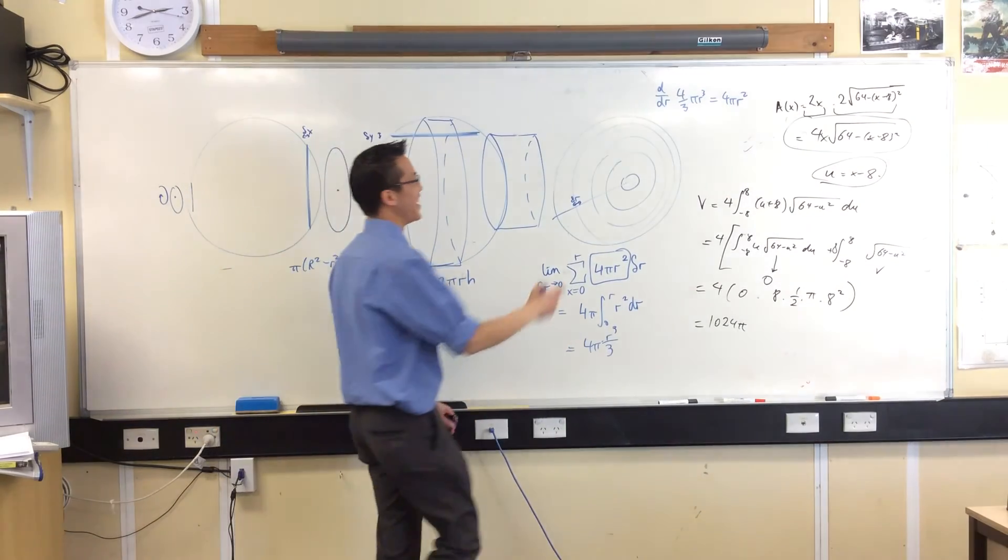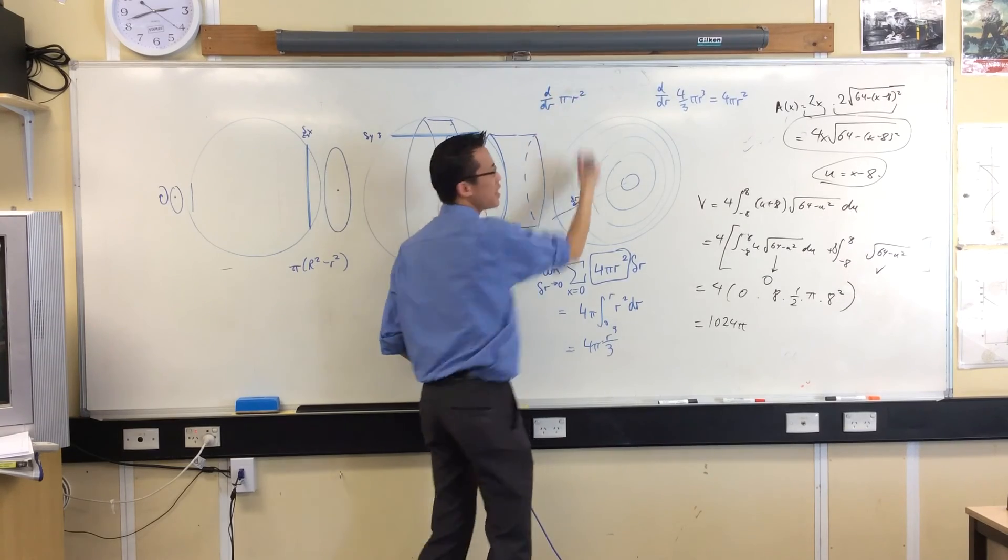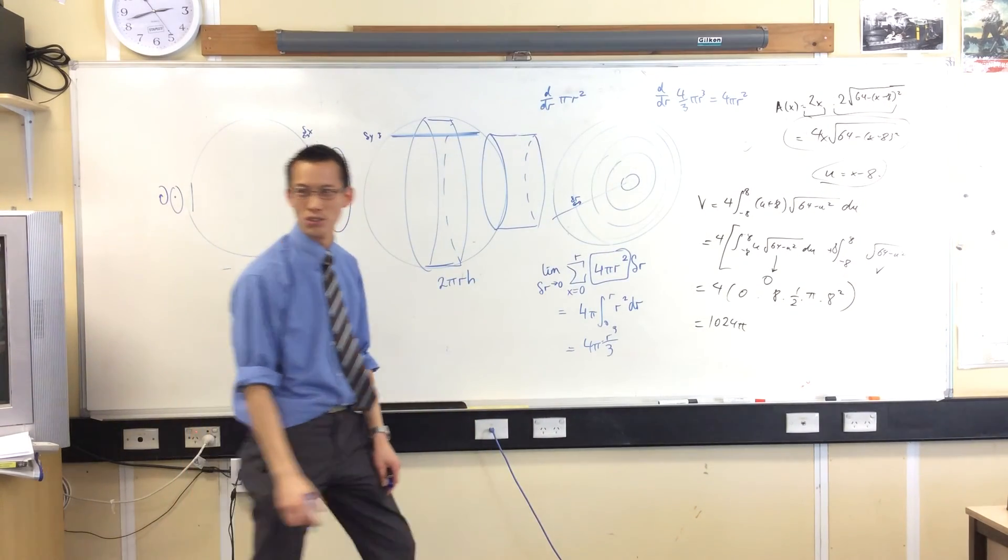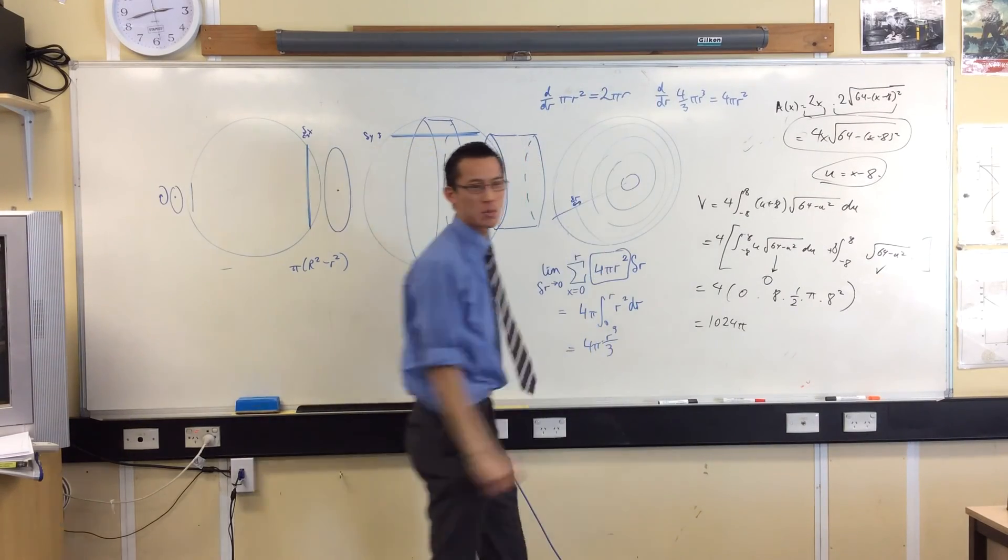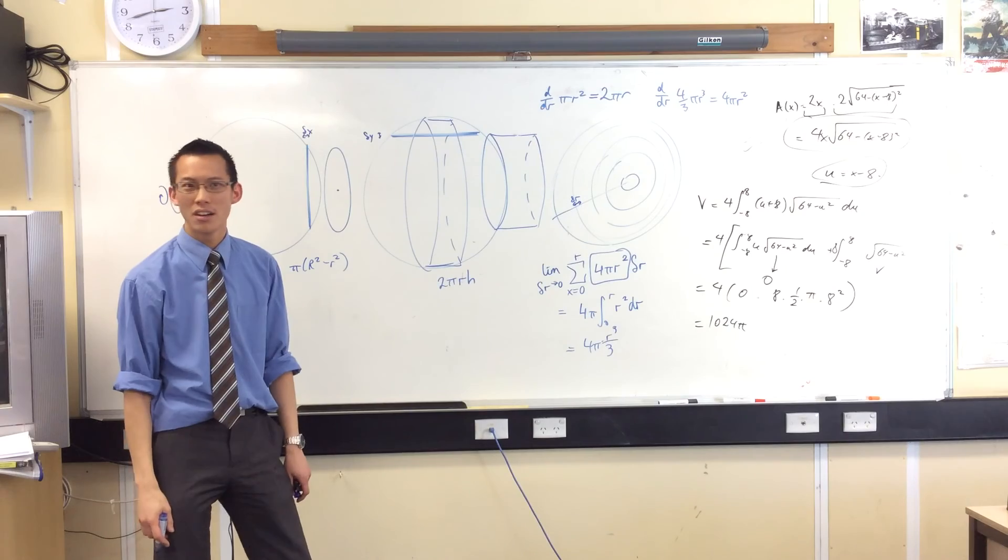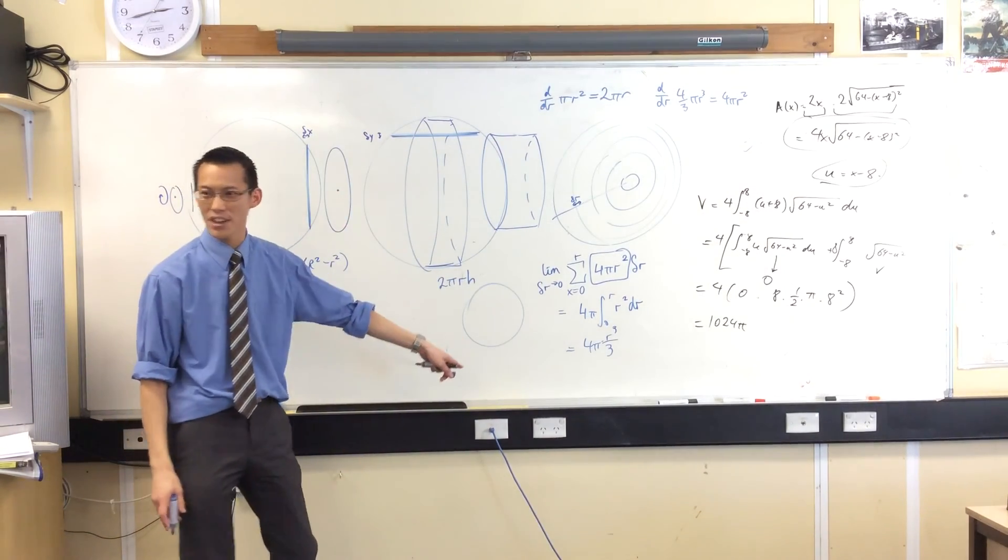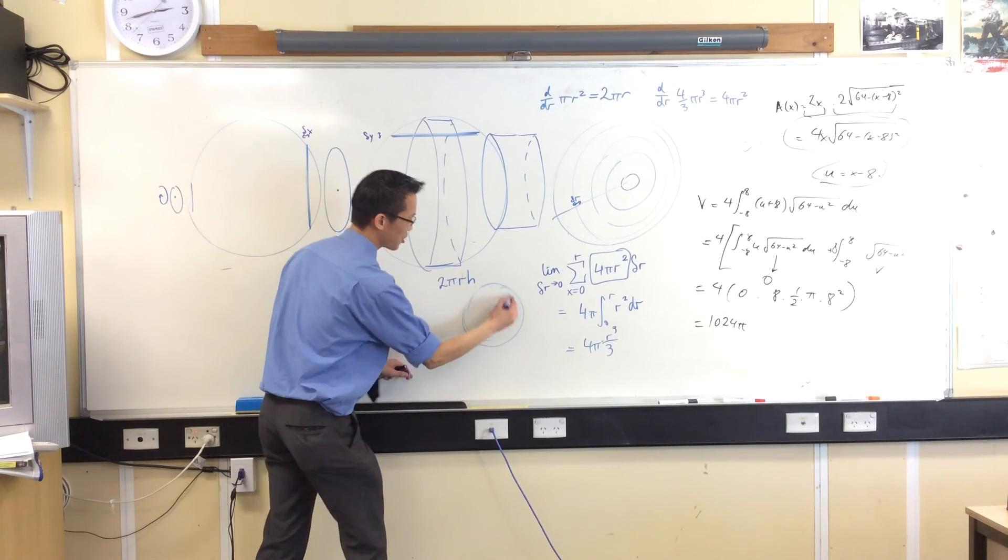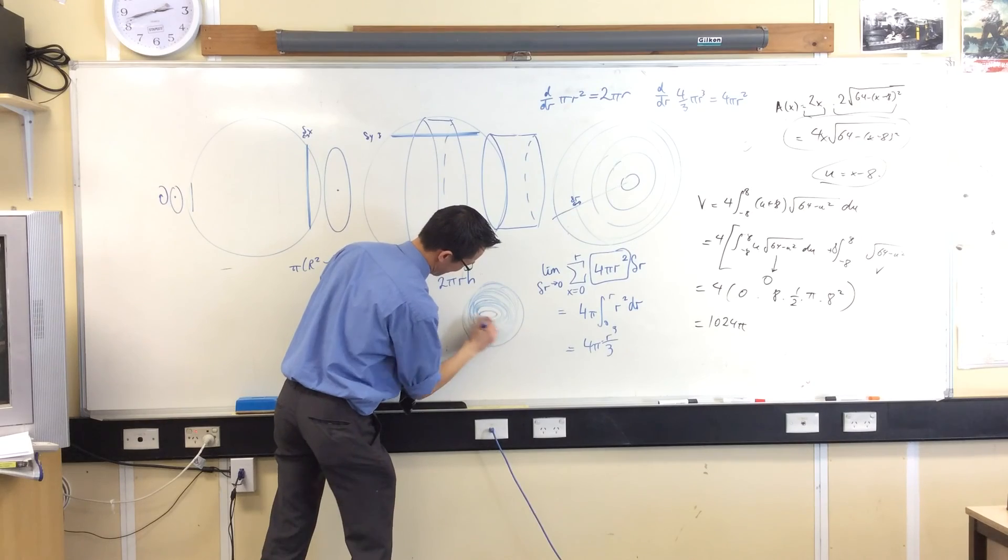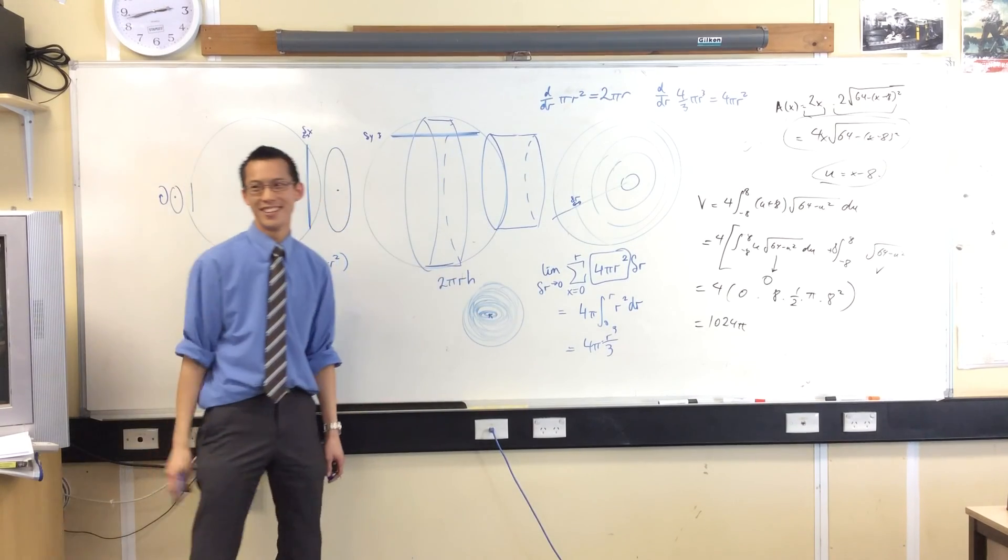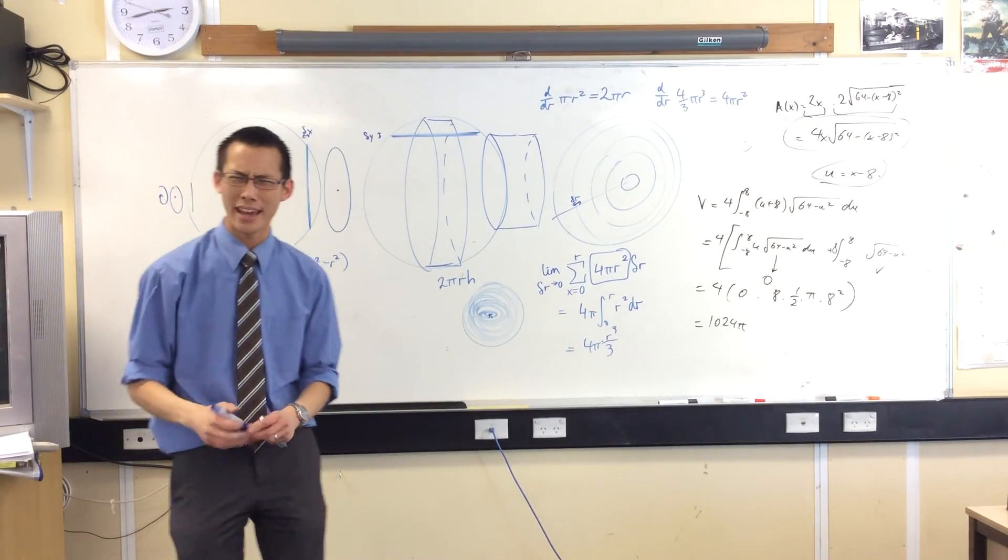Did anyone ever notice that the derivative of the area of a circle is the circumference, why is that? Because, if you want to work out the area of a circle, you just take a bunch of circumferences, there you go. You add them all up, and you end up with your area.